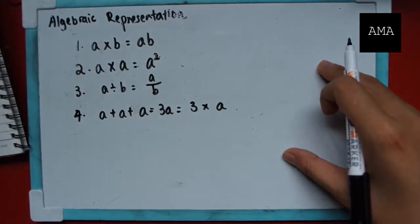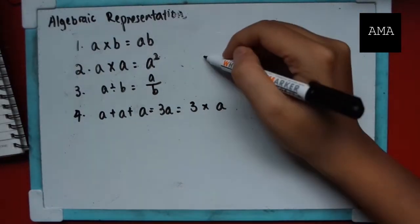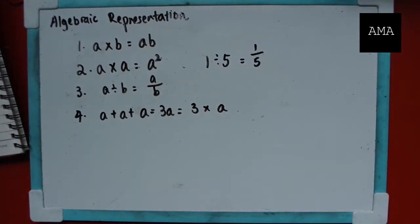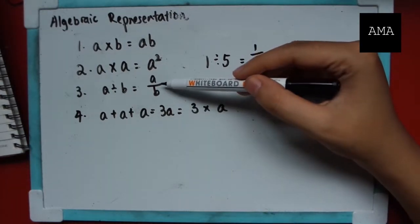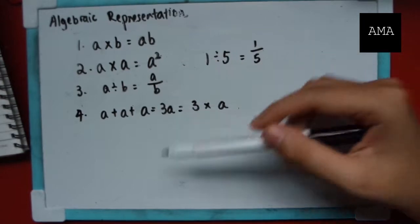Now for the third point, it should be something a little bit more familiar because you learn this with numbers. For example, one divided by five is actually the fraction one over five, right? So it's the same thing for variables. So a divided by b is the same as a over b as a fraction.